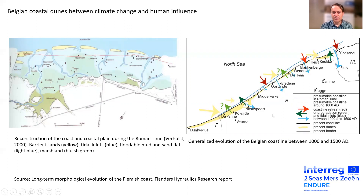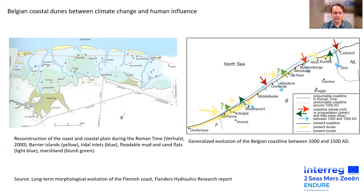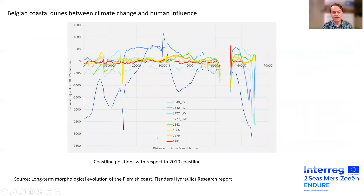By the Middle Ages, between 1000 and 1500 AD, we had a rather stable shoreline position with some progradation or retreat, but not at significant rates. And this can be seen in this plot of different shorelines in the last 400 years.